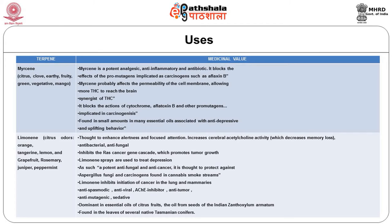Limonene is found in citrus, orange, tangerine, lemon, grapefruit, rosemary, juniper, and peppermint. It is thought to enhance alertness and focus, increases cerebral acetylcholine activity which decreases memory loss, and is antibacterial and antifungal. It inhibits the Ras cancer gene cascade which promotes tumor growth.